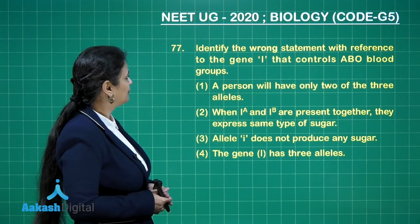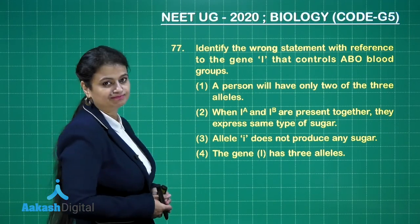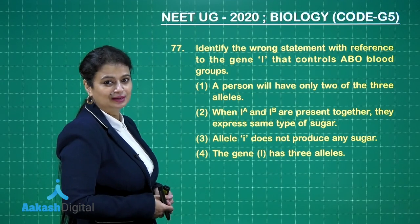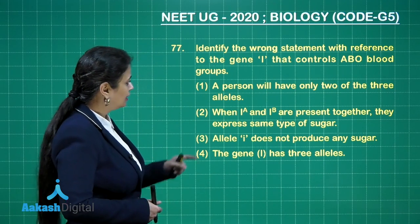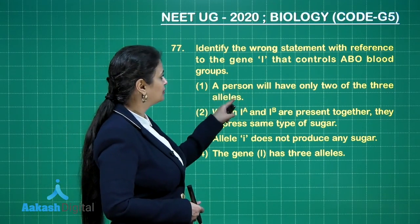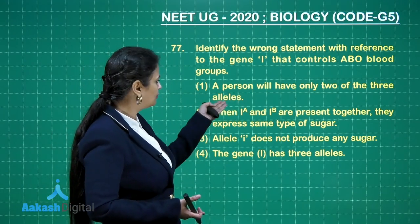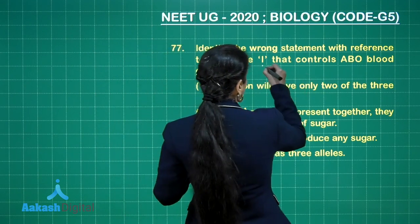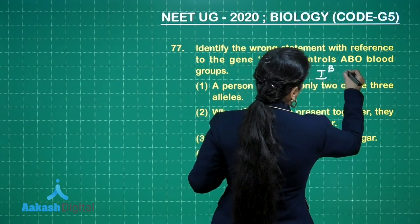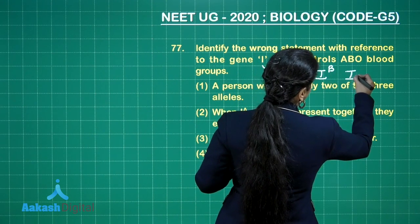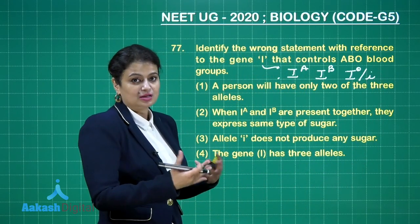Next: identify the wrong statement with reference to gene I that controls the ABO blood group — a very important topic. A person will have only two of the three alleles. The gene I has three alleles: Iᴬ, Iᴮ, and Iᴼ (where Iᴼ is recessive). This is a case of multiple allelism.